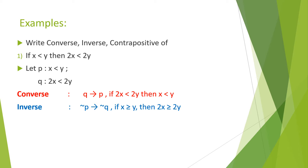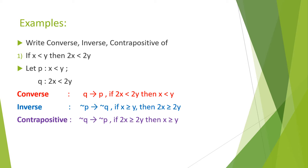Therefore the inverse is: if x is greater than or equal to y, then 2x is greater than or equal to 2y. And the contrapositive is negation Q implies negation P — that means if 2x is greater than or equal to 2y, then x is greater than or equal to y.